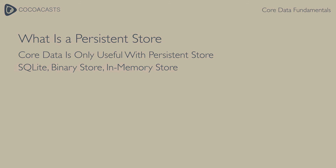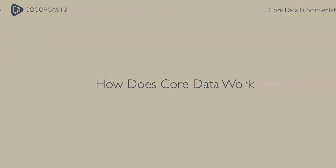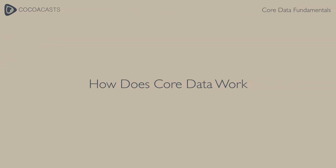Most applications use a SQLite database as their persistent store. As we saw in the previous lesson, SQLite is lightweight and very fast. It is great for mobile and desktop applications. Now that we know what Core Data is and what the Core Data stack looks like, it is time to explore how the stack operates in an application.